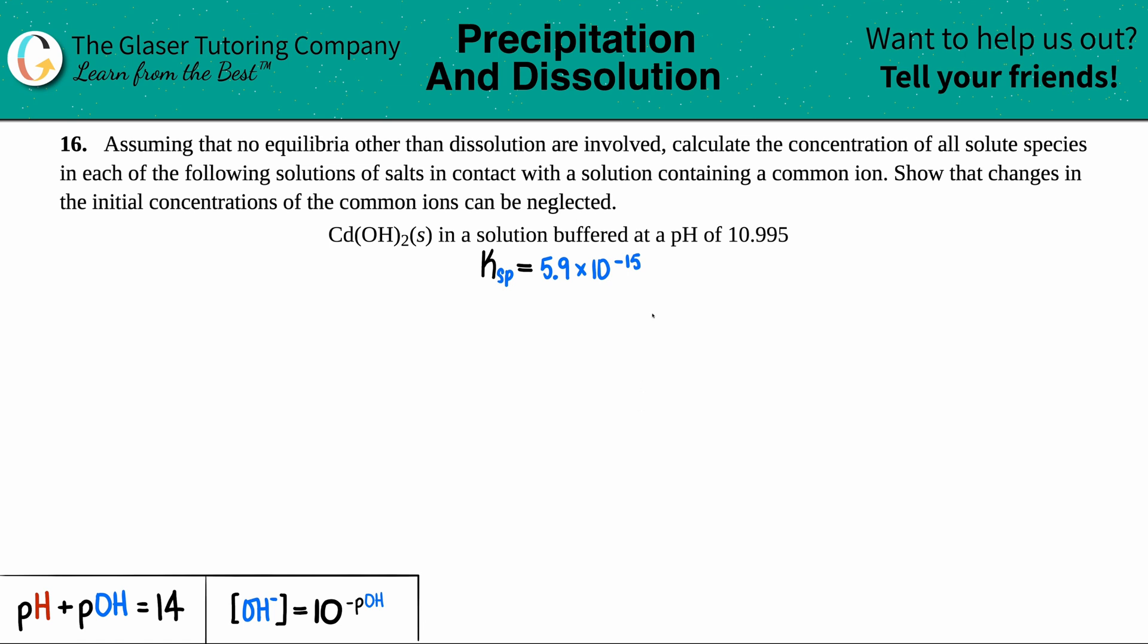Number 16. Assuming that no equilibria other than dissolution are involved, calculate the concentration of all solute species in each of the following solutions of salts in contact with a solution containing a common ion, and show that the changes in the initial concentrations of the common ions can be neglected.